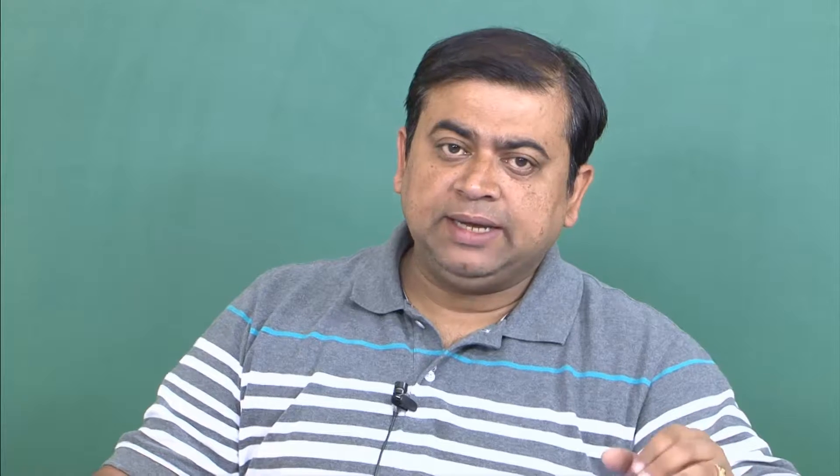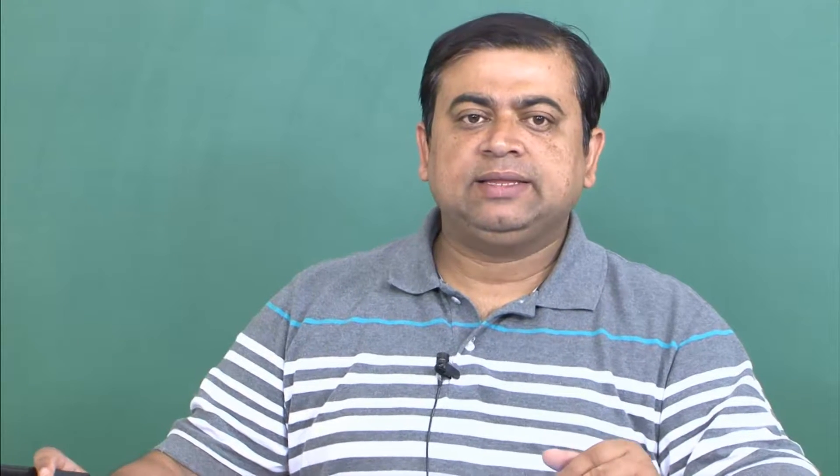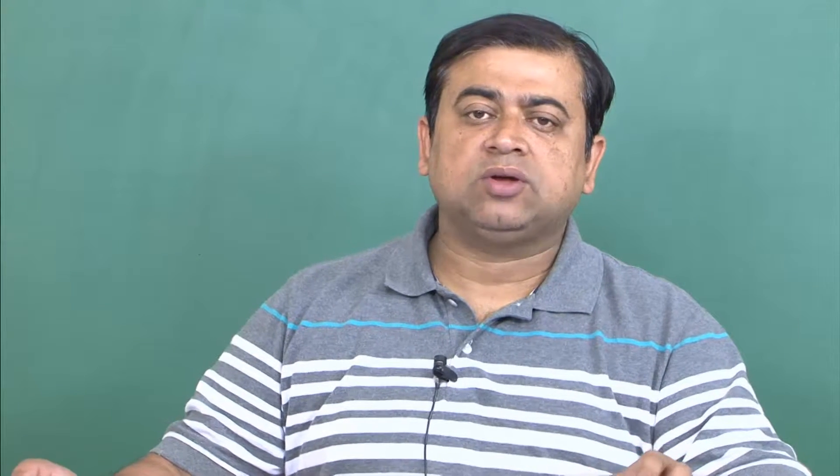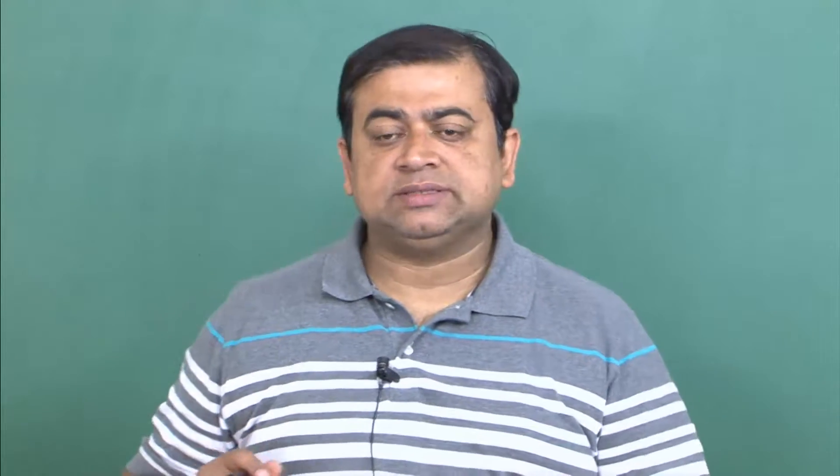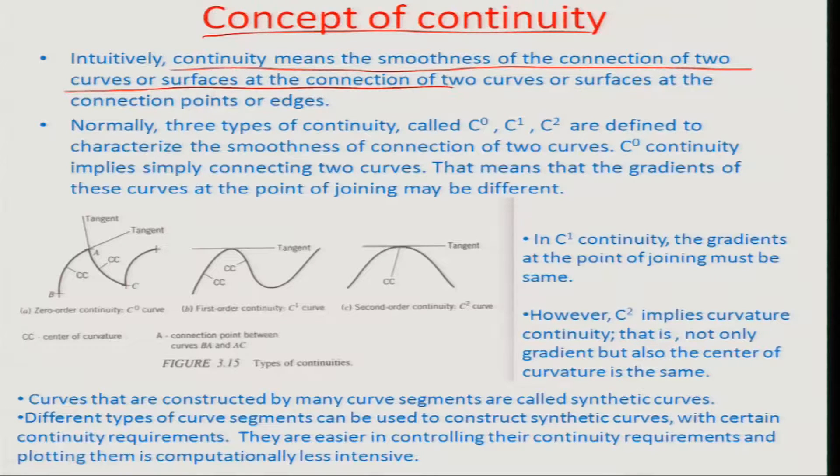But for plotting a surface one part of course is the engineering curve that is used to plot the surface. The other part is how we are able to connect such curves to each other in a continuous manner or in some kind of a relationship, so that there is a complete mapping without any breaks or without any discontinuity of the surface which is in concern. We want to now first investigate this concept of continuity for plotting such curves. Intuitively, continuity means the smoothness of the connection of two curves or surfaces at the connection of two curves or surfaces at the connection points or edges.